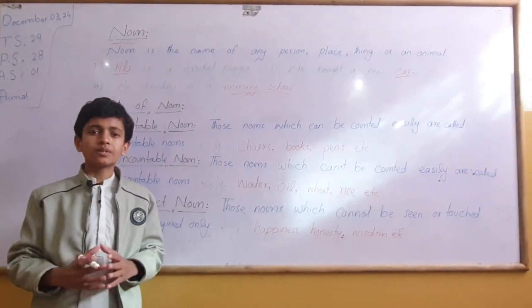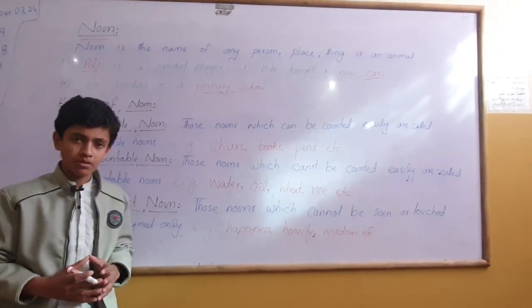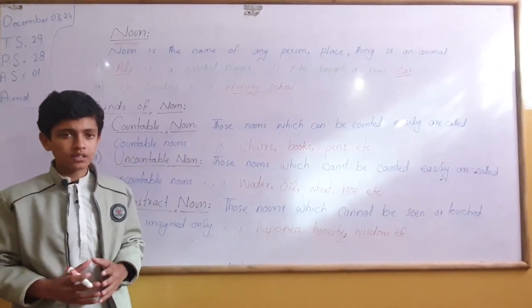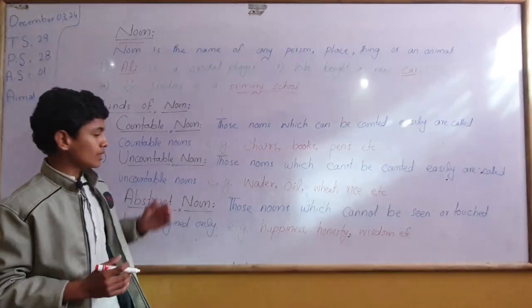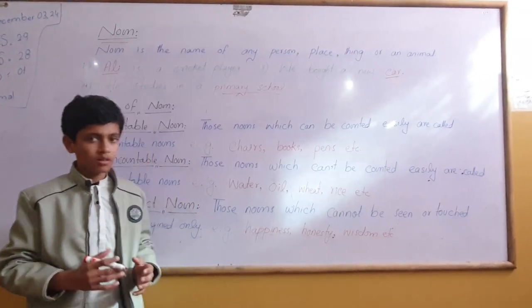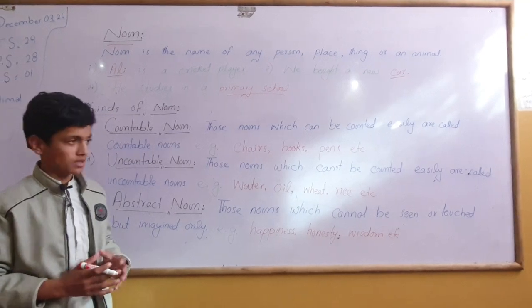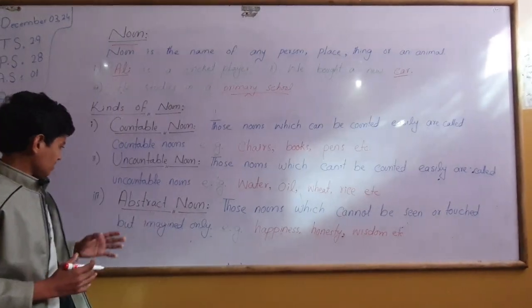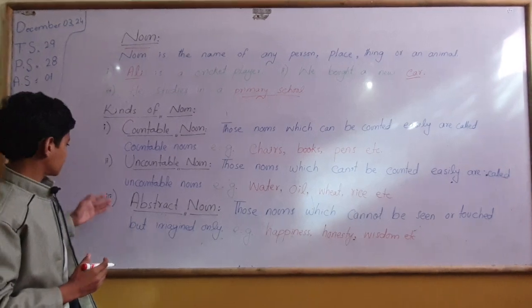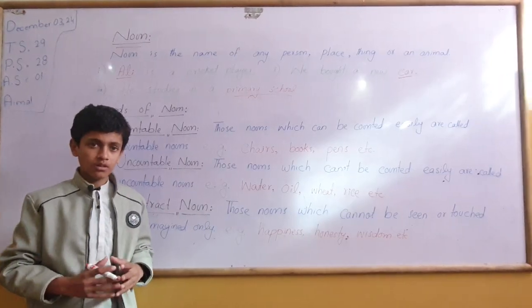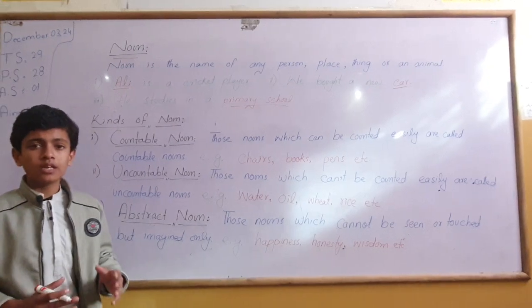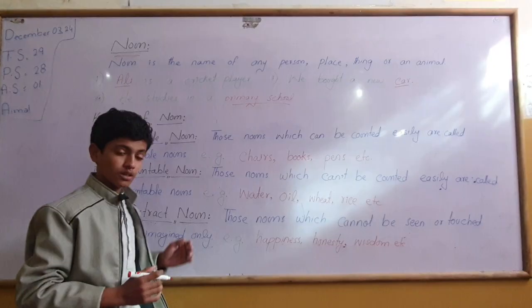Those nouns which cannot be counted easily are called uncountable nouns. Those nouns which can be imagined only are called abstract nouns.